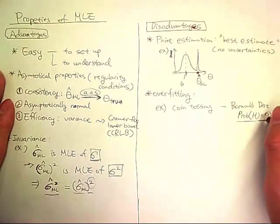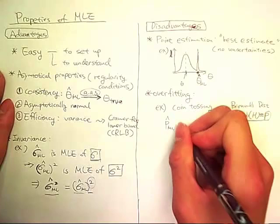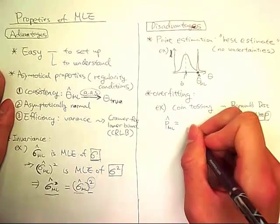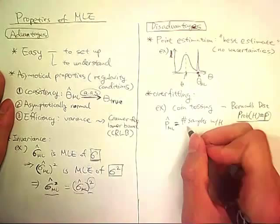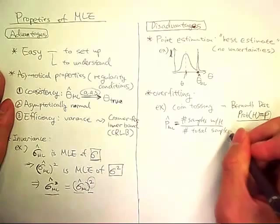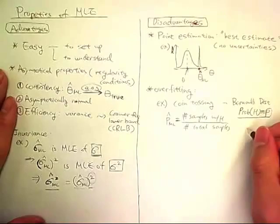Now this can be calculated, MLE, by number of samples with head over number of total samples. But let's assume that we've tossed a coin three times and it all resulted in tails.